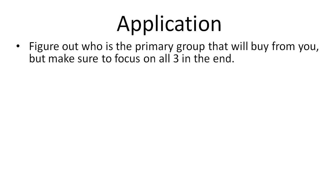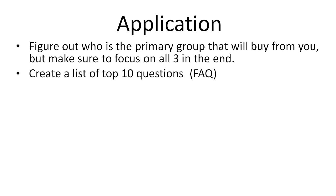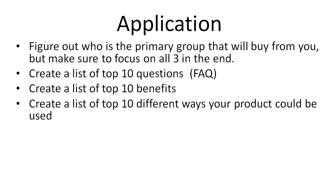For application, figure out who your primary group is — the salespeople, the thinkers, or the creative opportunists. Focus on your primary group first, but make sure you ultimately appeal to all three groups. Then create a list of top 10 questions like an FAQ, create a top 10 list of benefits, and create a list of top 10 different ways your product could be used.